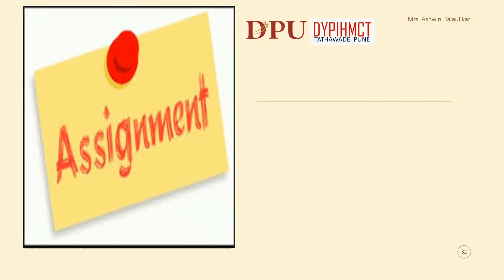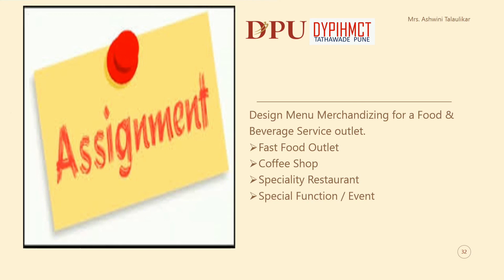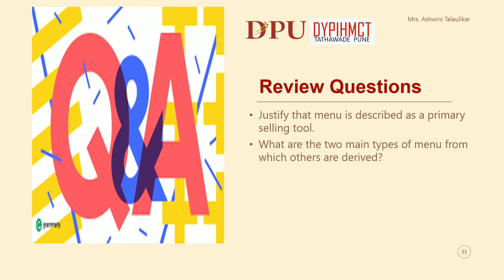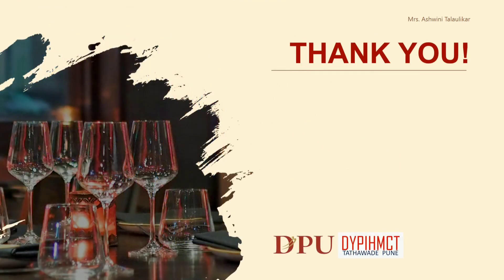Assignments can be undertaken by students to practice menu merchandising, such as designing menu merchandising for food and beverage service outlets like fast food outlets, coffee shops, specialty restaurants, and special functions and events. Review questions cover the contents discussed in the presentation: justify that the menu is described as a primary selling tool; what are the two main types of menu from which others are derived; discuss three key factors in designing a menu layout. Thank you for your patient hearing — hope the contents discussed have helped in understanding the principles of menu merchandising.